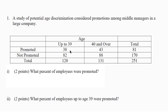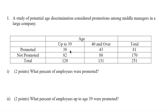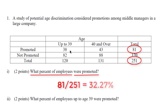Let's investigate this data. What percent of employees were promoted? When doing these questions, it's important to break them down. 'What percent of employees' means all employees, which is 251. There were 81 employees that were promoted, so we get 81 over 251, which is 32.27%. Make sure to round to two decimal places.